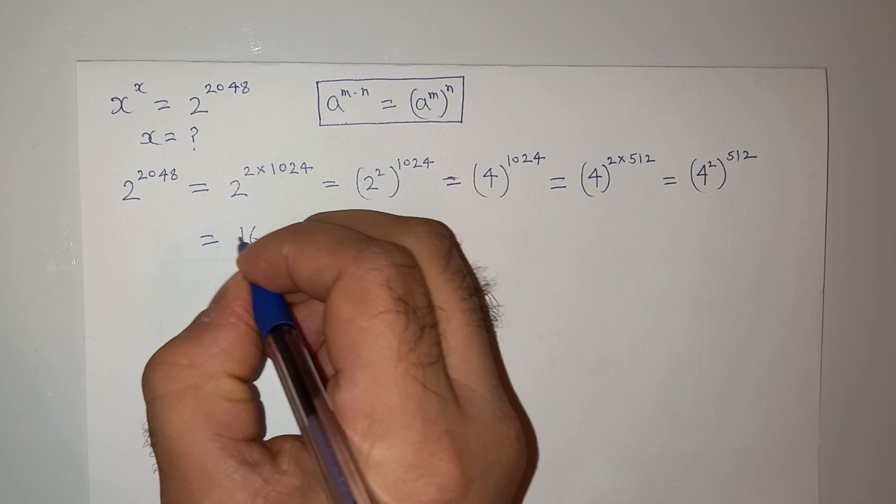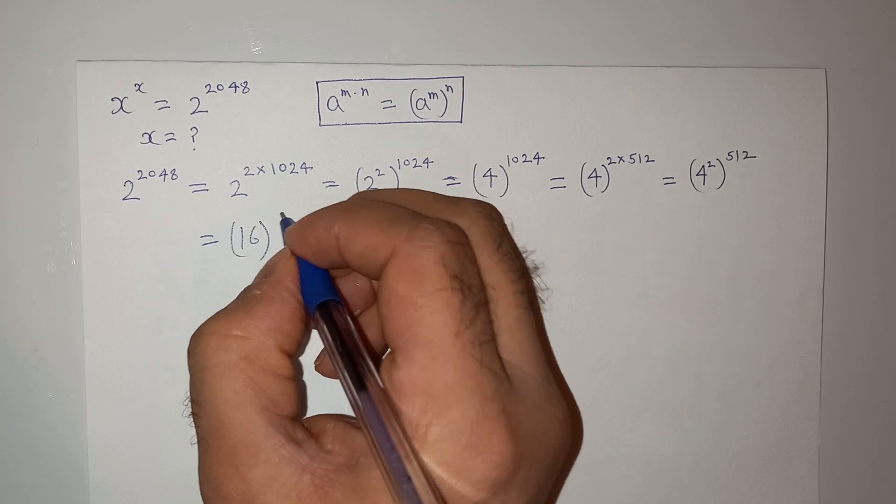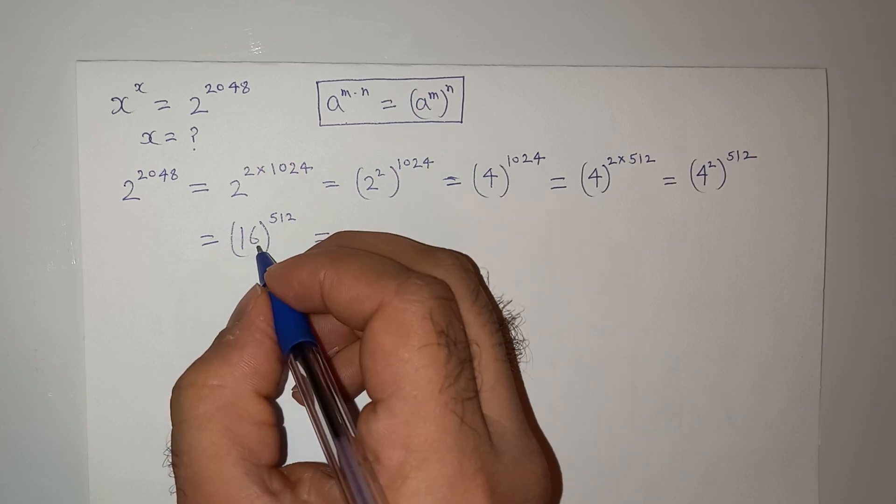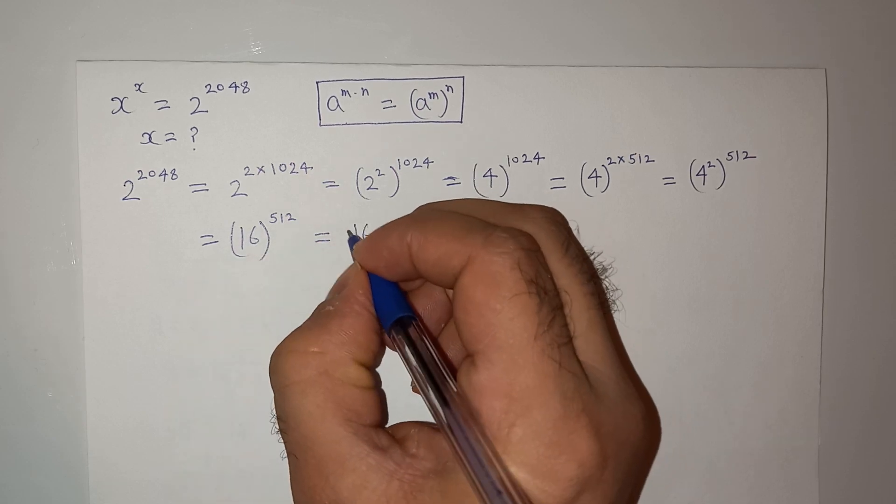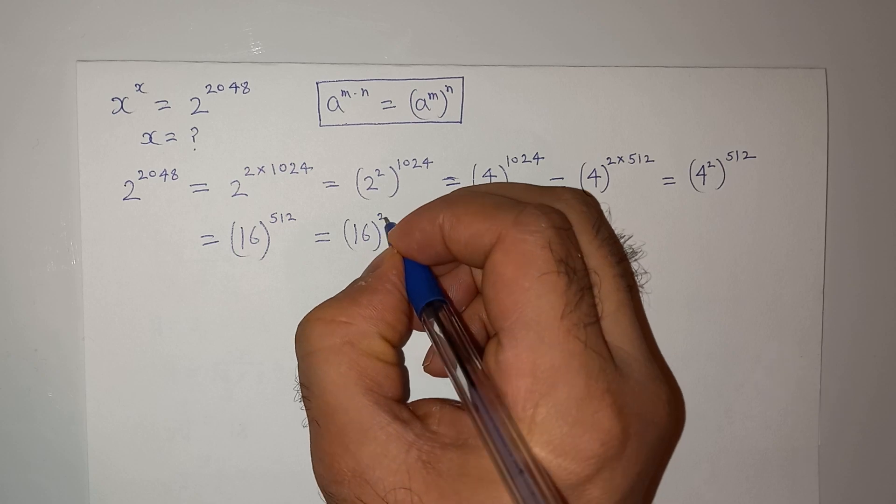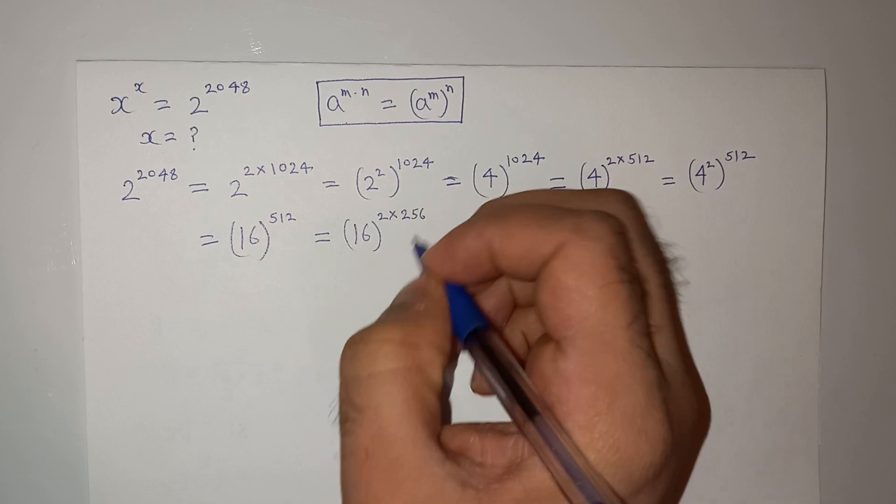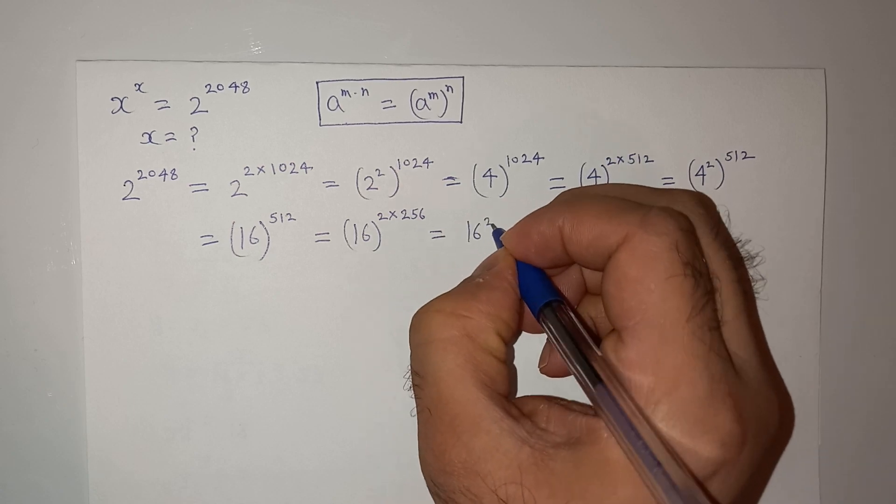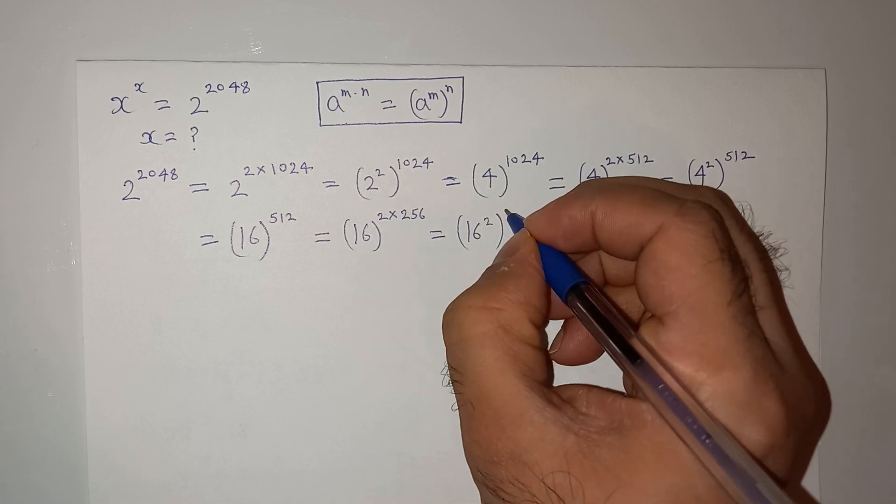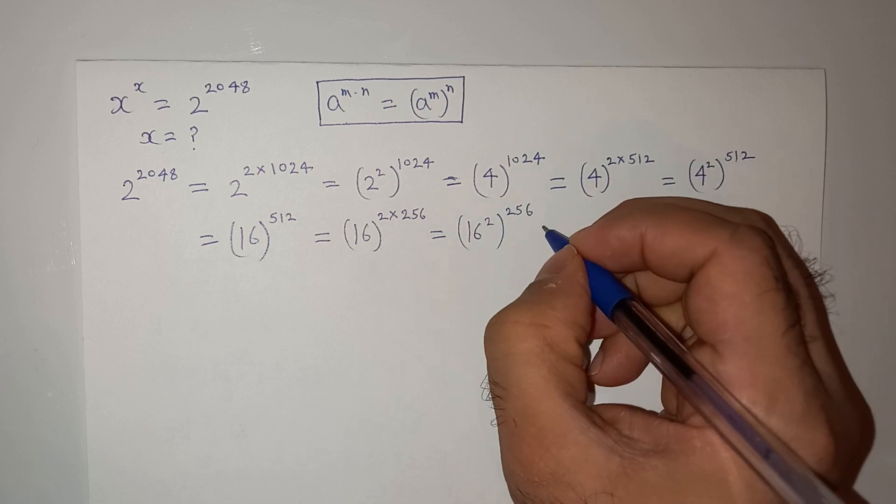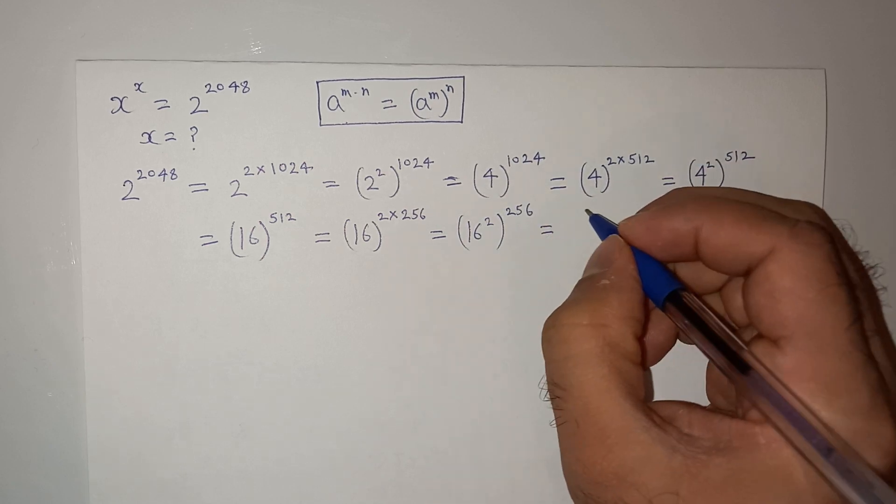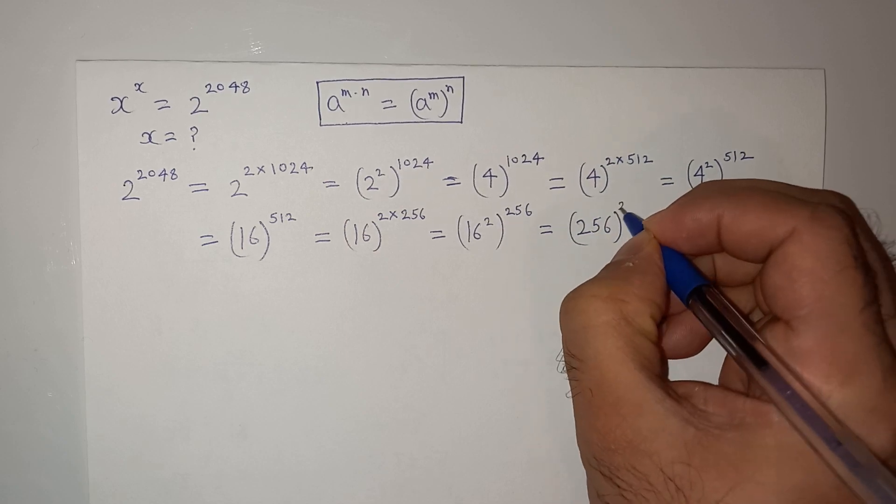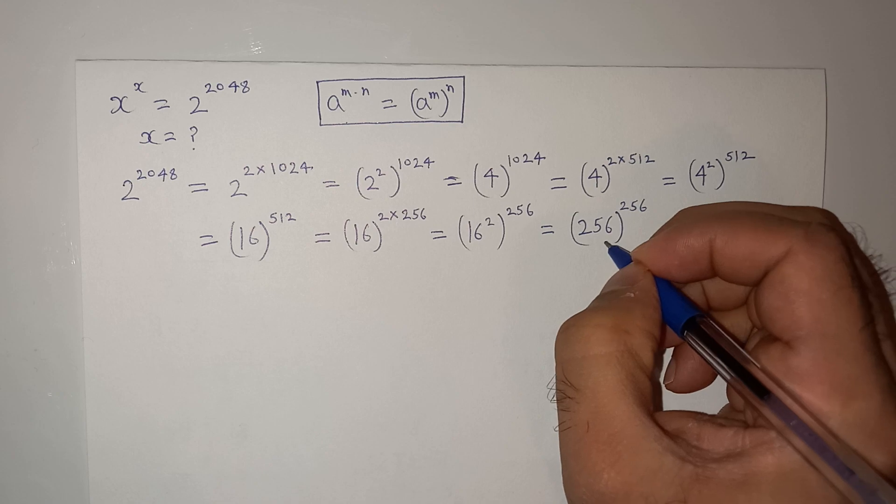16^512 equals to 16^(2×256), equals to (16^2)^256. 16^2 is 256, so we get 256^256.